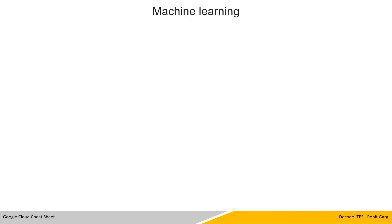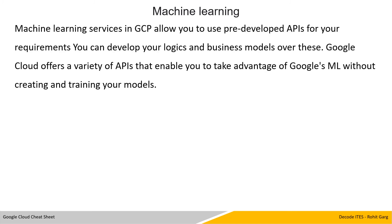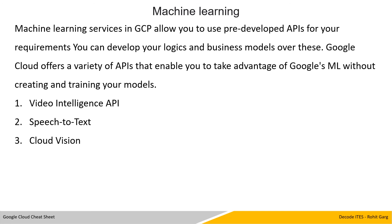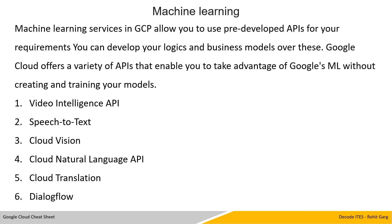Machine Learning is one of the critical and complex services provided by Google Cloud Platform. Machine Learning services in GCP allow you to use pre-built APIs for your requirements, and you can develop your logic and business models on top of these. Google Cloud offers a variety of APIs that enable you to take advantage of Google's Machine Learning without creating or training your own models. Some available APIs include Video Intelligence, Speech-to-Text, Cloud Vision, Cloud Natural Language, and Cloud Translation.